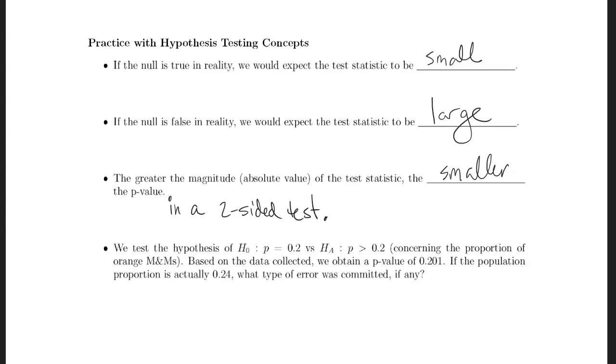And then here's one last example. Let's test the hypothesis of the proportion equaling 20% versus the alternative hypothesis of the true proportion being greater than 20%, where the context here is the proportion of orange M&Ms in a bag of candy. Based on the data collected, suppose we obtain a p-value of 0.201. If the population proportion is truly 0.24, what type of error was committed, if any?